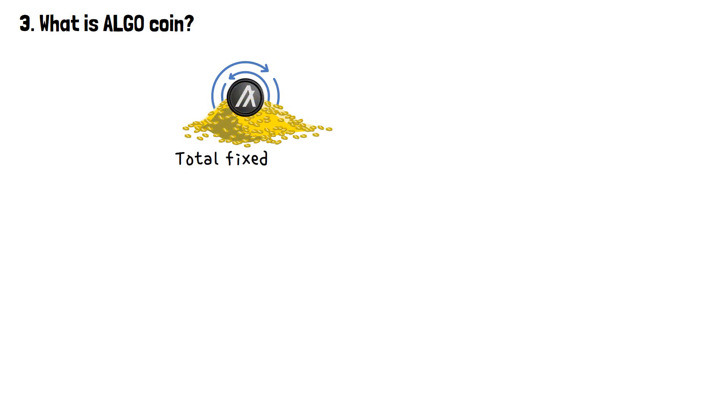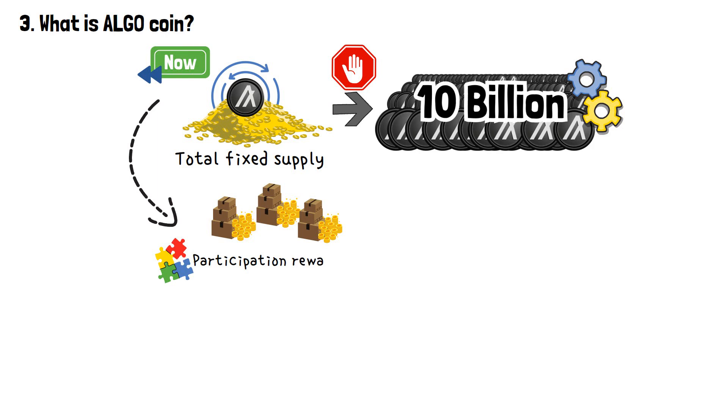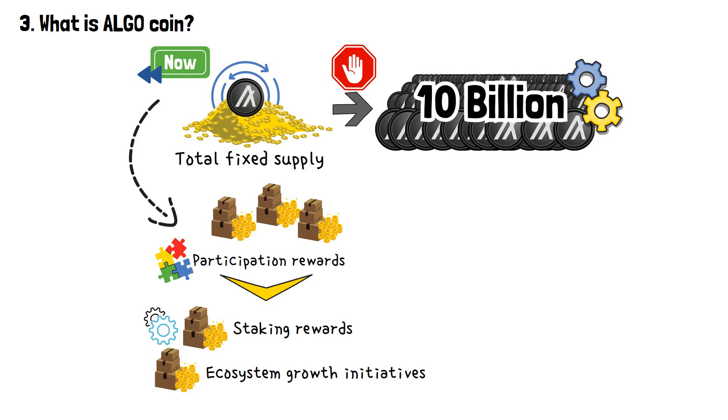Tokenomics-wise, Algo follows a supply model with a total fixed supply of 10 billion tokens. This means that once 10 billion Algo coins are created, the issuing of new coins will stop forever. Up until now, these tokens have been gradually released into circulation through such programs as participation rewards. Over time, additional Algo tokens have been released through various other mechanisms, such as staking rewards and ecosystem growth initiatives.